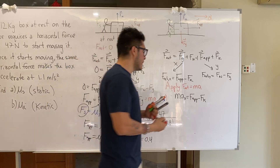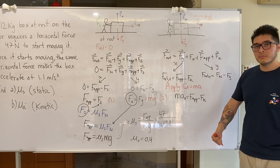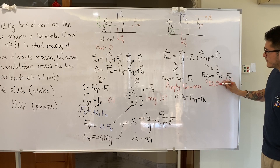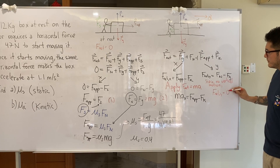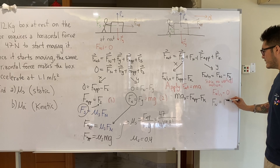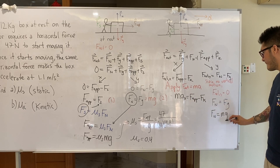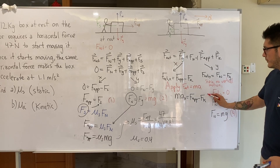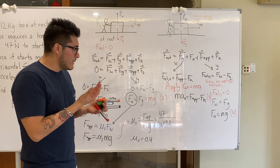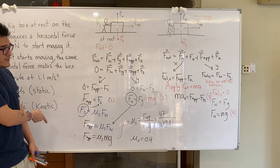Since there's no vertical motion, f_net_y equals zero, giving us normal force equals mg — the same conclusion as before. Now for part b, we use the kinetic friction formula: fk equals mu_k times fn. Substituting into Newton's second law equation for the x-direction: m times a equals applied force minus mu_k times fn.